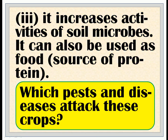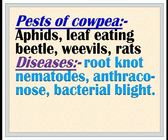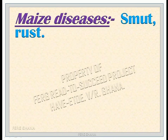Pests and diseases that attack these crops: Pests of cowpea are aphids, leaf-eating beetle, weevils, rats. Diseases include root-knot nematodes, anthracnose, and bacterial blight. Pests of maize include army worm and leaf-hopper. Maize diseases include smut and rust.